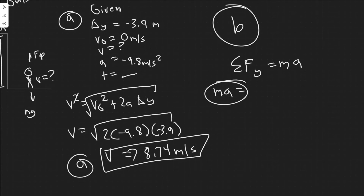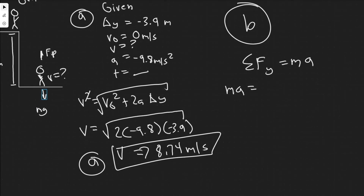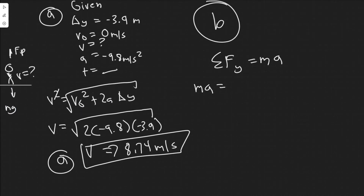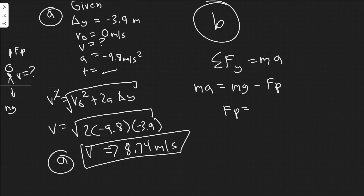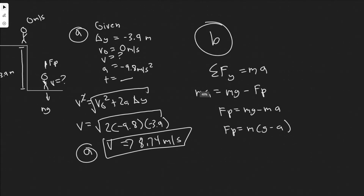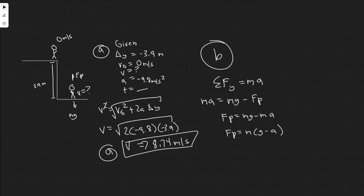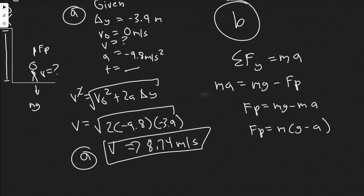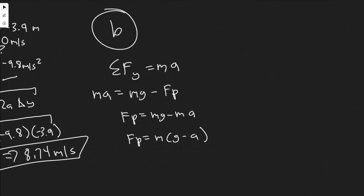Setting downwards as positive, ma equals mg minus F_P. Rearranging: F_P equals mg minus ma, or F_P equals m times (g minus a). In order to find F_P, we need to find the acceleration over this interval — the 0.7-meter deceleration phase. We'll do that using kinematics.